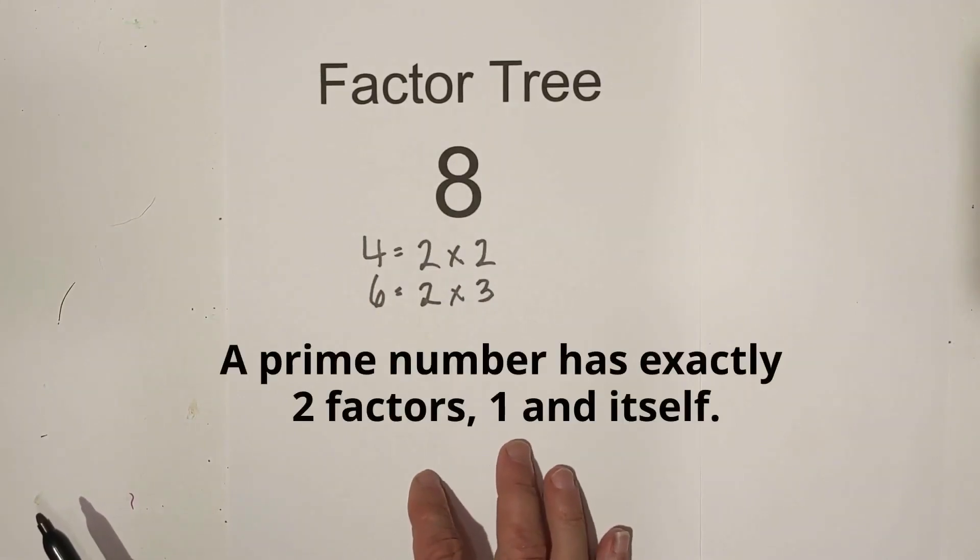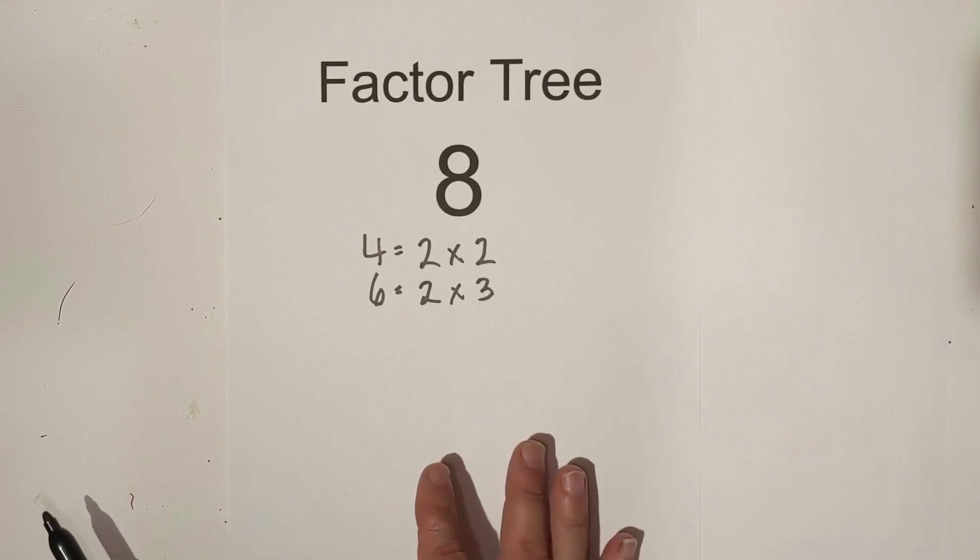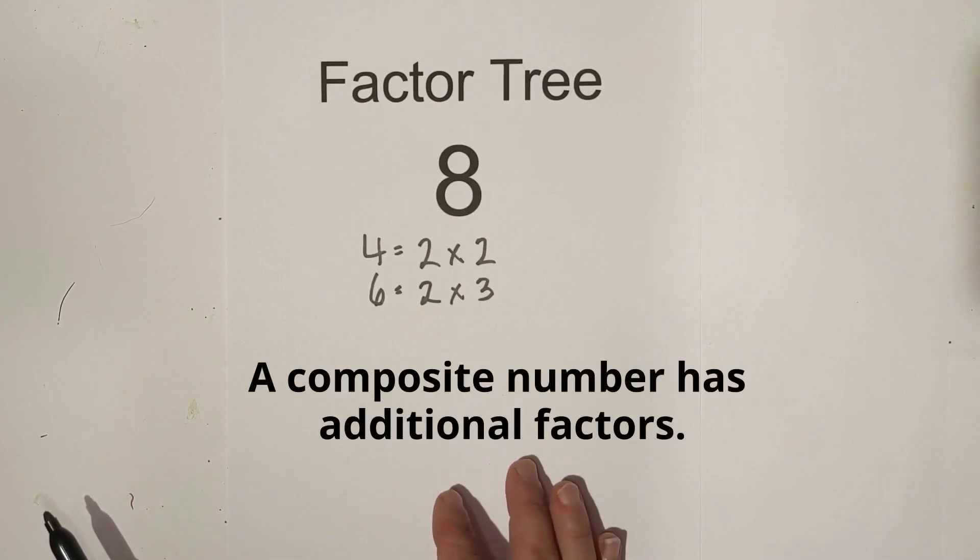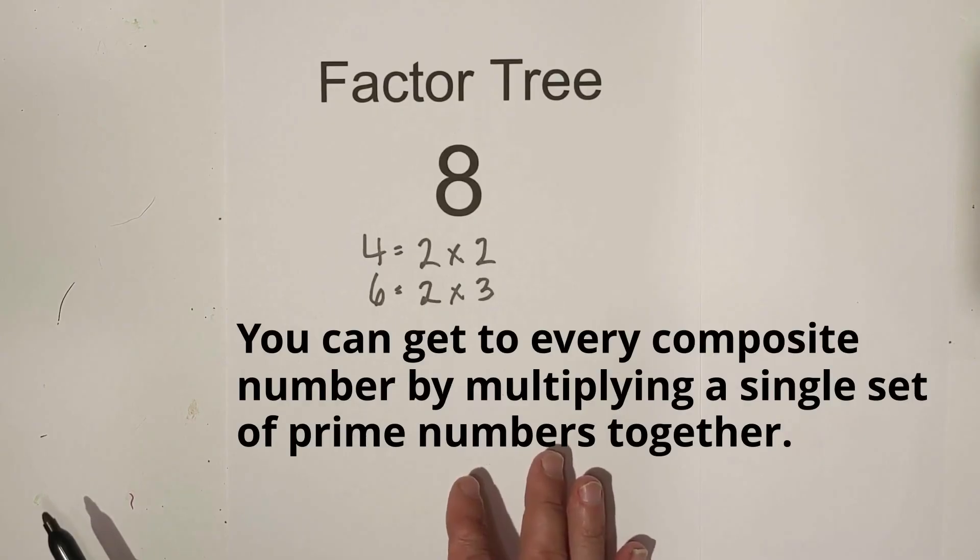Next, a prime number has exactly two factors: one and itself. Now I have found it helpful whenever you do a factor tree that you learn the following prime numbers: two, three, five, seven, and eleven. A composite number is a number that has additional factors, and you can get every composite number by multiplying a single set of prime numbers together.